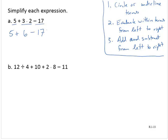And now, we add and subtract from left to right. So 5 plus 6 is 11. And now, I'll subtract 17. Let's think of that as 11 plus negative 17, if we need to. And that would give us negative 6.